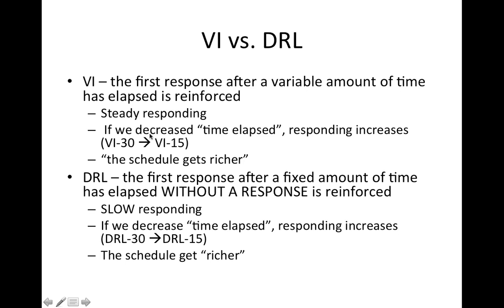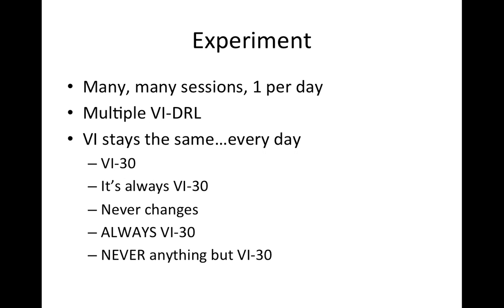If we decrease the VI interval, responding would probably increase — the schedule gets richer. DRL requires that the first response after a fixed amount of time has elapsed without a response is reinforced, producing slow responding — the animal must withhold responding for a period of time. If we decrease the DRL time, responding would also increase. We did this experiment over many sessions, one session per day, using a multiple VI-DRL arrangement.